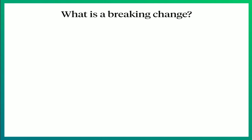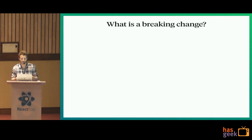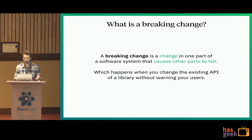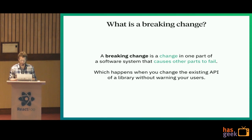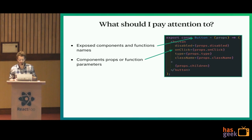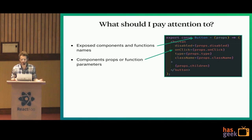I want to dive into breaking changes — an important topic since any outside team member can do a pull request and merge code with their own team directly. A breaking change is a change in one part of a software system that causes other parts to fail — when you change the existing API of libraries. What to pay attention to: the signature of your components, exposed component and function names, props, and function parameters — changing or deleting props will cause issues.